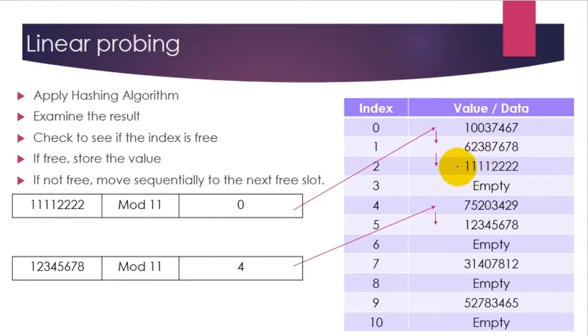So we move down to one. Well, is that empty? No. We move down again. Well, that was empty, and so we put in there the record 11112222. In the same way, we've got a record number here. We put it through modulo 11, and it produces the hash value of four. And so we go to index four. Well, index four is currently taken by something, and then we move down. We probe using a linear process until we find an empty slot. So there's the empty slot, and therefore the number goes in there.